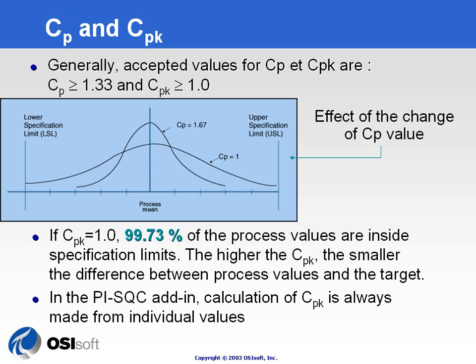Commonly used values for CP and CPK are a CP of 1.33 and a CPK greater than 1. The higher the spread, the lower the CP, and the more centered around the process mean, the higher the CP. If you get a CPK equal to 1, you can say that for a normally distributed variable, 99.33% of the data will fit within the specification limits. The higher the CPK, the better you are and the less defective product you will produce.